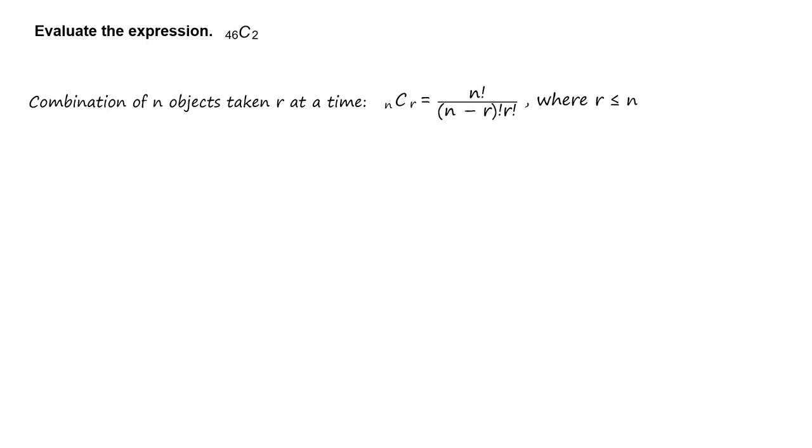where r is less than or equal to n. So write 46 choose 2 is equal to 46 factorial divided by the quantity 46 minus 2 factorial times 2 factorial.